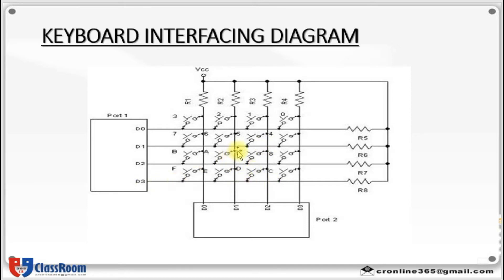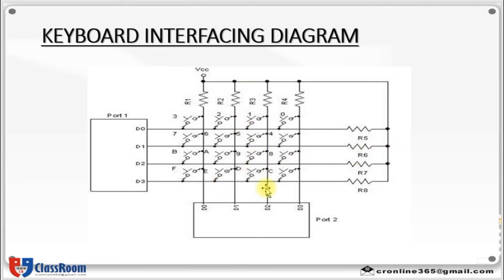If no key has been pressed, reading the input port will show all 1s, since the columns are all connected to VCC — the high supply. If all the rows are grounded and a key is pressed, one of the columns will show a 0, since the key pressed provides a path to ground.